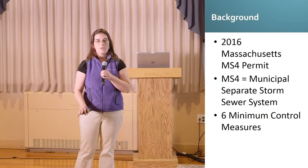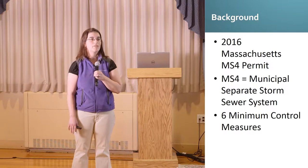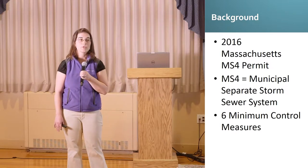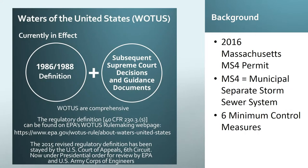Each of your municipalities is regulated for the discharge of stormwater from your municipal separate storm sewer system to waters of the United States. Generally speaking, waters of the United States, as per the Clean Water Act jurisdiction guidance provided in 2008, includes traditional navigable waters, wetlands adjacent to traditional navigable waters, non-navigable tributaries of traditional navigable waters that are relatively permanent — where the tributaries typically flow year-round or have continuous flow at least seasonally, for example typically three months — and wetlands that directly abut such tributaries.